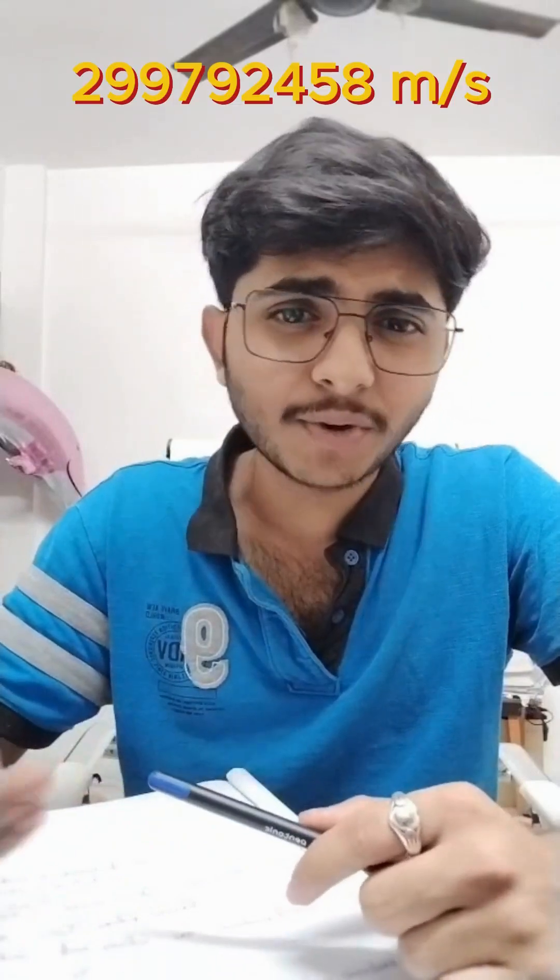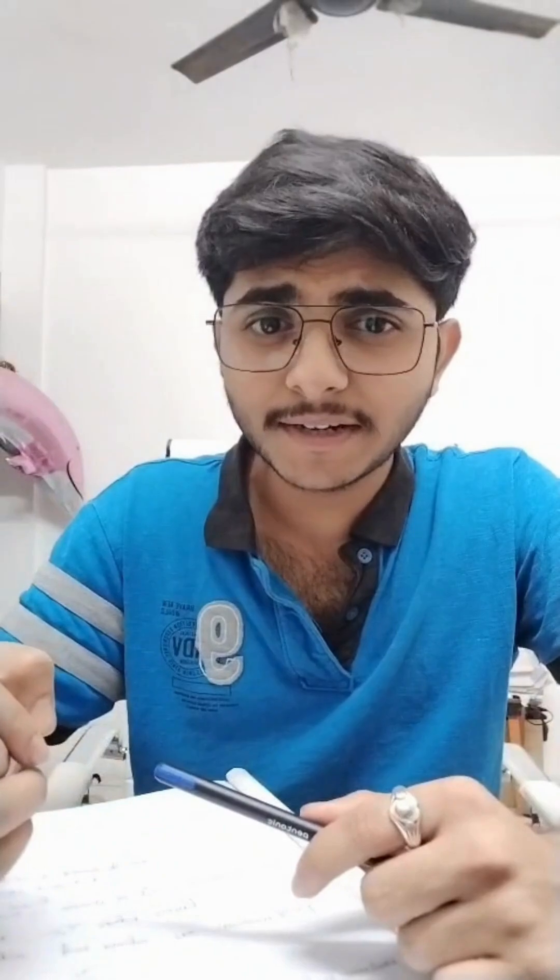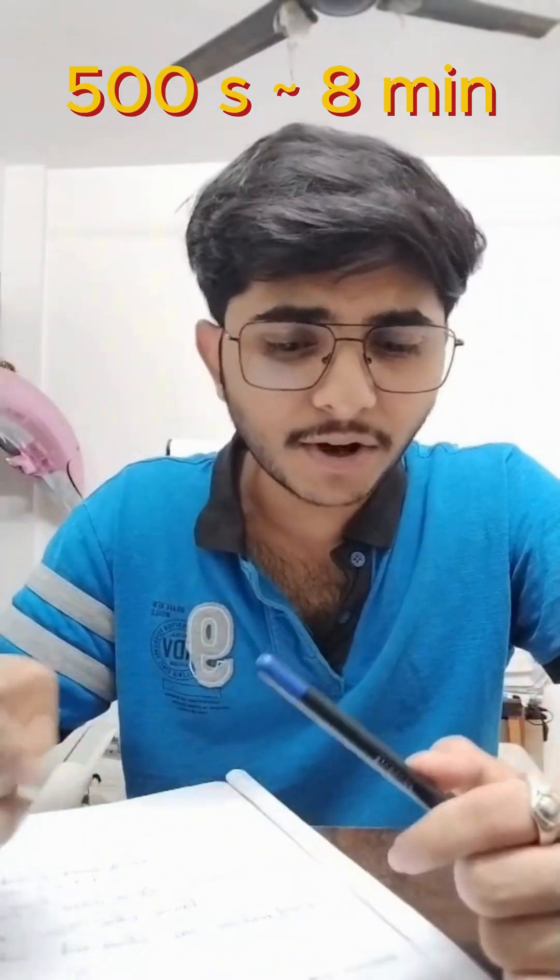First, let's understand the speed of light. The speed of light is constant in every medium, and that speed is 3×10⁸ meters per second. The Earth-Sun distance is 1.5×10¹¹ meters, so the delay will be distance divided by the speed of light, which is 500 seconds.